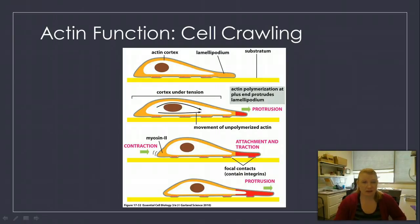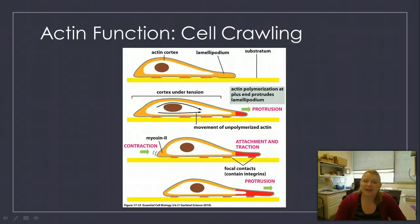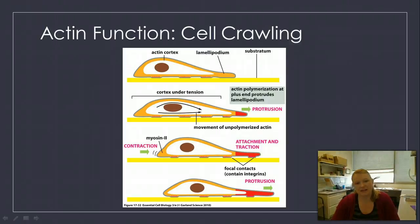Then it's going to attach to the surface it's on, and this creates those focal contacts. So the first step is the protrusion, the second step is the attachment, and then we have the contraction from the back end, which works with myosin.